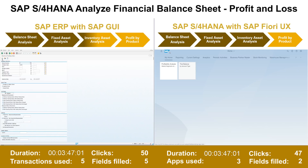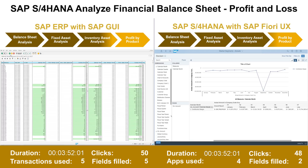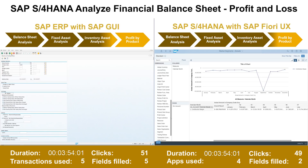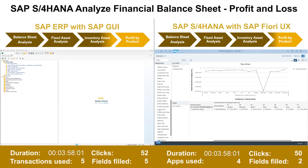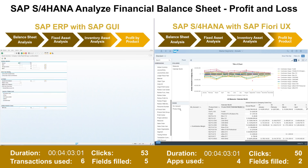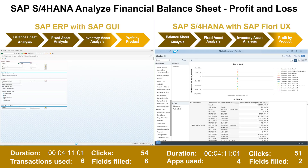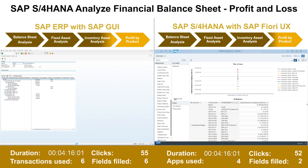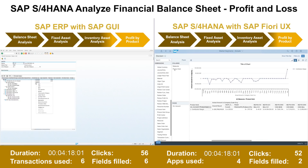The controller enters the profitability analysis app, which by default shows the contribution margin over the months in the fiscal year. The controller drags and drops the product sold to the rows to see how successfully the finished product sold. The calendar month dimension is then removed from the structure, and the controller drags and drops the product sold dimension to columns to see the contribution margins by products for the whole fiscal year.